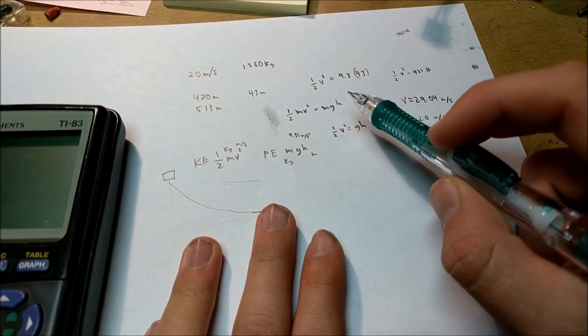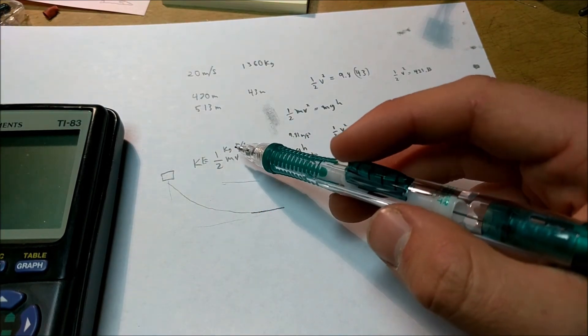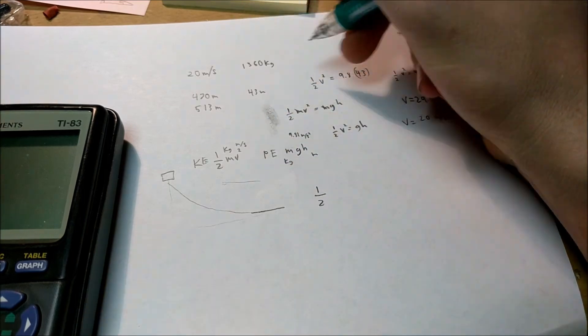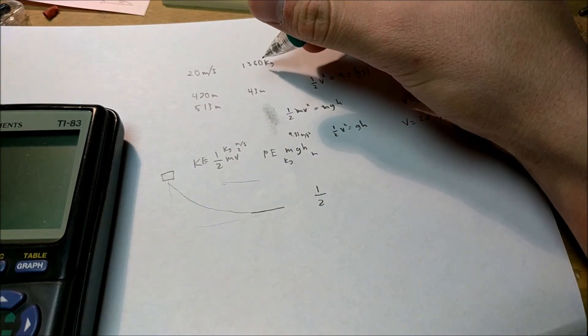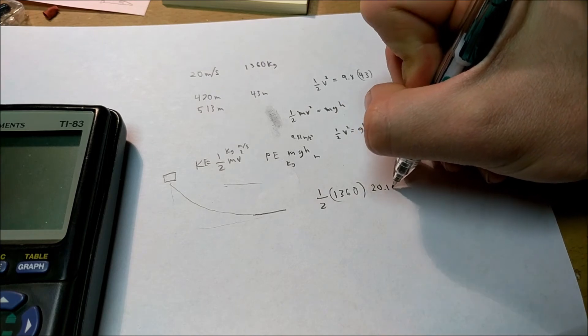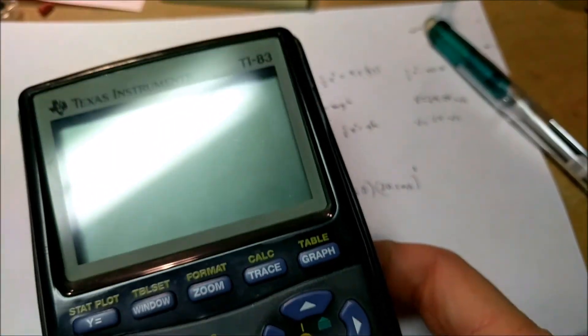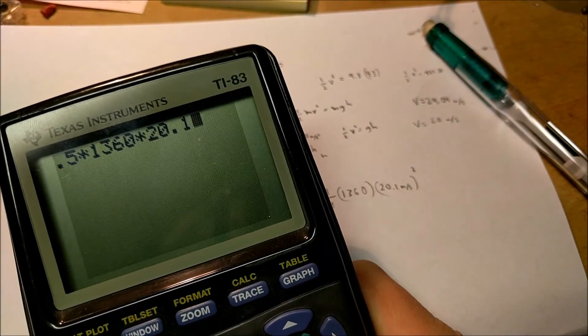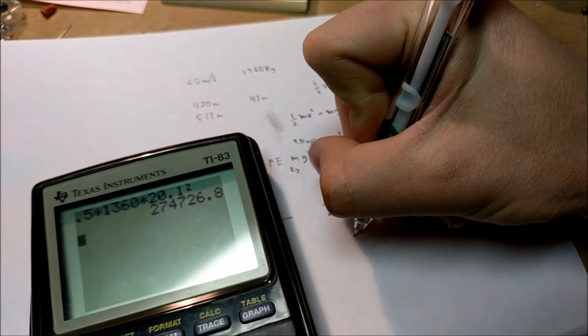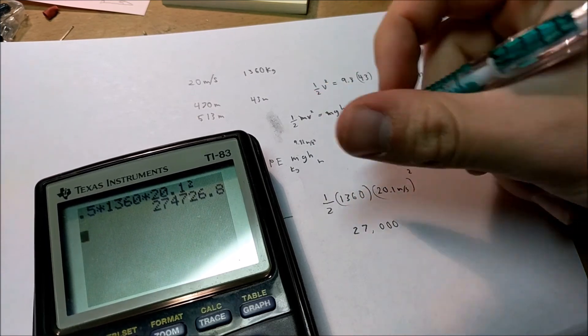Now, let's go ahead and use these potential energy and kinetic energy equations to find the kinetic energy of the car at the bottom of the hill. We know that the car is a mass of approximately 1360 kilograms. We know the velocity was 20 meters per second, it's actually 20.1 meters per second, and that is squared. So if we calculate this, we get that the car had a kinetic energy of approximately 27,000 joules. That is a lot of energy.